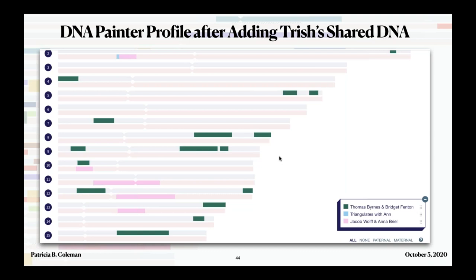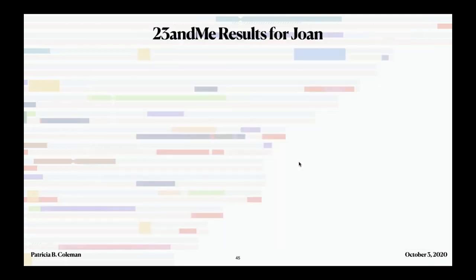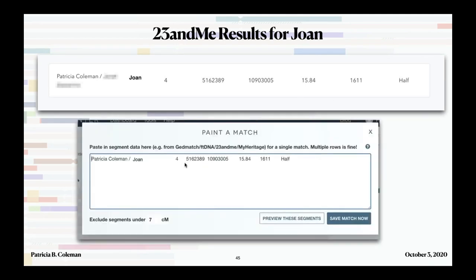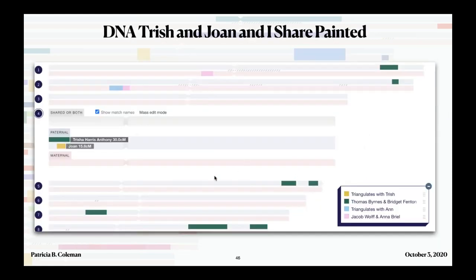Looking at Joan — if I click on yes, the chromosome browser shows Trish in purple sharing 402 centimorgans across 19 segments with me, and Joan shares 16 with me across one segment. On chromosome 4 you can see where Joan and Trish both fall. At the bottom of the page is part of the table of Trish's data. Just like before, I copy the table and paste it into Paint a New Match. Here's Trish in dark green — Thomas Burns and Bridget Fenton on my paternal side, my dad's mother's side. On chromosome 10 I now have both a paternal and a maternal segment in about the same place.